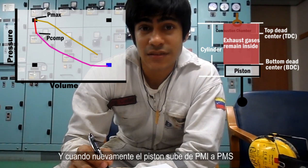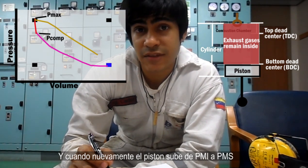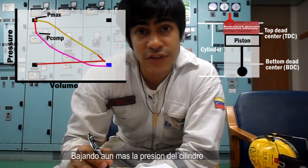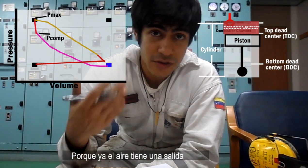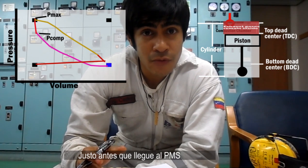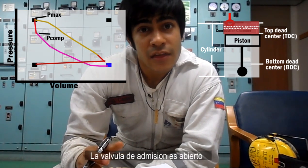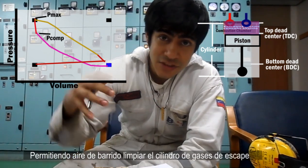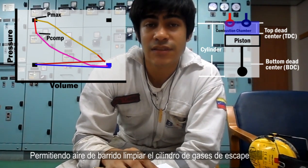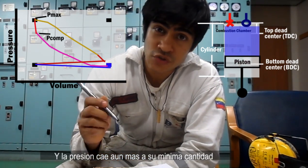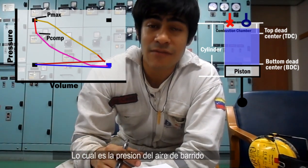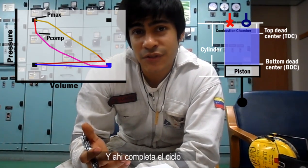When the piston goes from bottom dead center back to top dead center, the exhaust valve is open, further decreasing the pressure in the cylinder because now the air — which is the exhaust gases — can escape. Just before it reaches top dead center, the inlet valve is open, allowing scavenge air to scavenge, or clean, the rest of the cylinder, and pressure is dropped even further to our minimum amount of pressure, which is our scavenge air pressure, which completes our cycle.